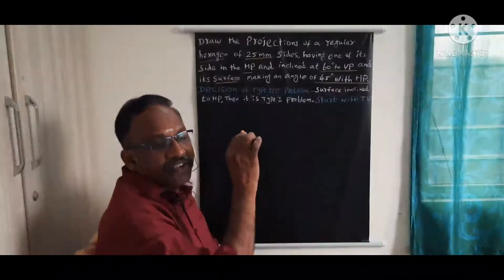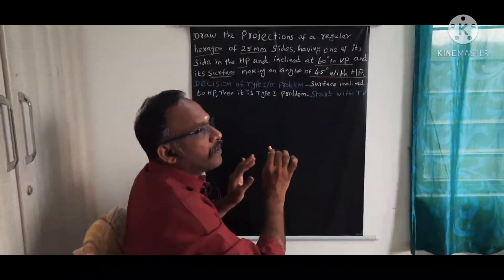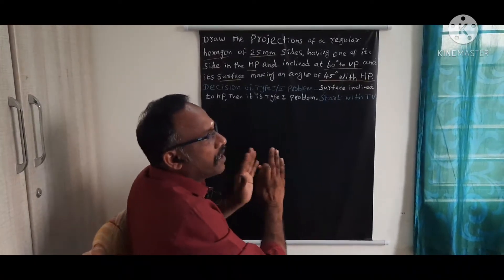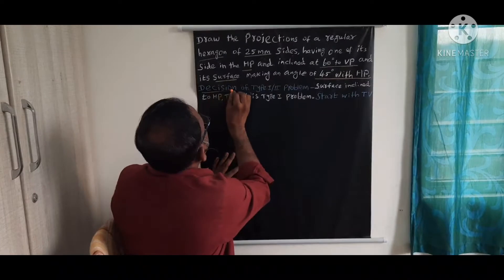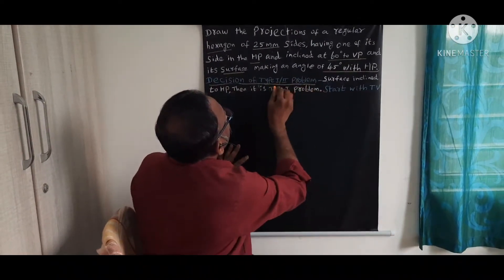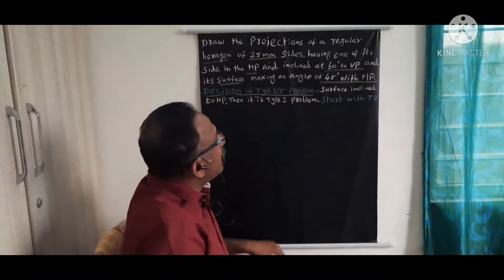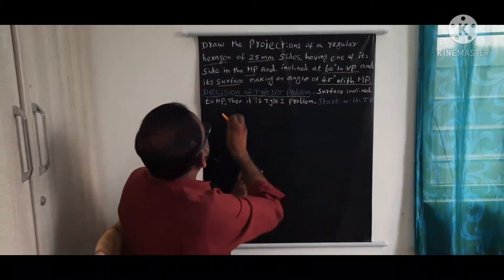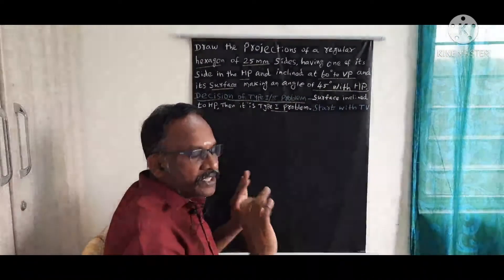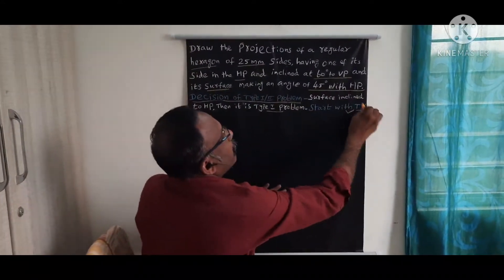The surface inclination is very important. This is the deciding factor for how we need to start the problem. What decision are we going to take based on this given problem — either the given problem is Type 1 or Type 2? Here, the surface is inclined to HP, so it is a Type 1 problem. For Type 1 problems, you can start with the top view.